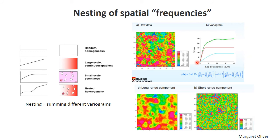In the green variogram, there's a first straight-line part, then when that levels off a second straight line kicks in, and the total variance is the sum of the variances of each component. That is nesting. You can nest in many different ways — add a nugget effect, add a trend, add small-scale patchiness — and if you add that all up, you get a variogram that contains all those components.